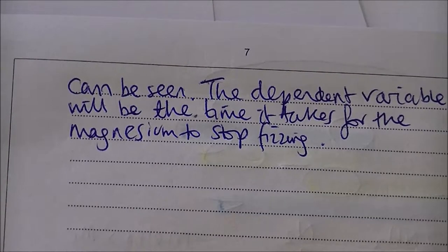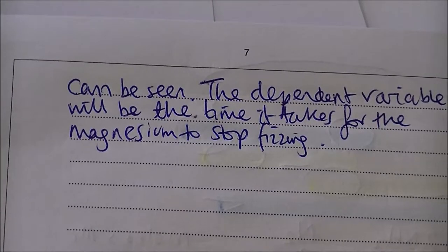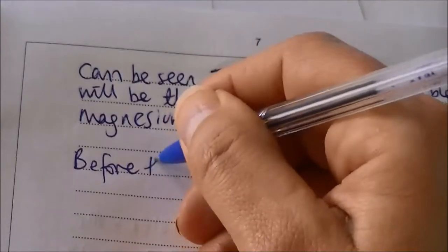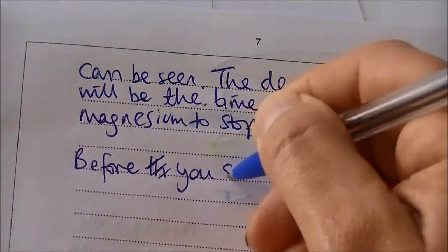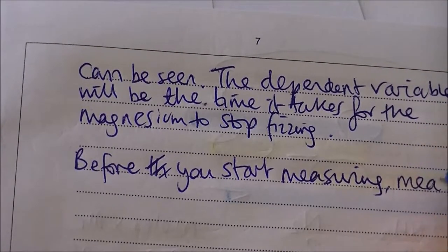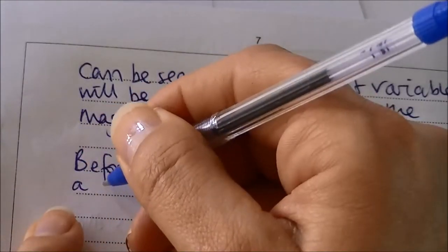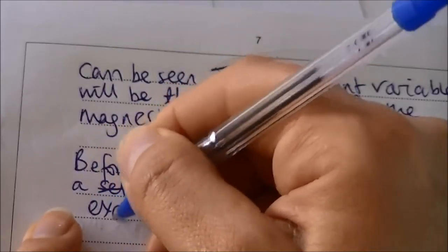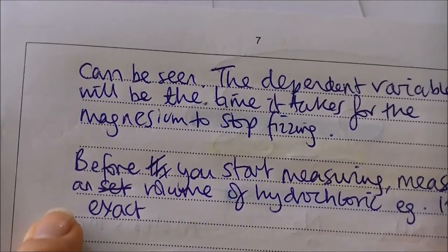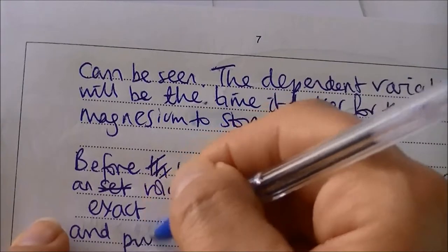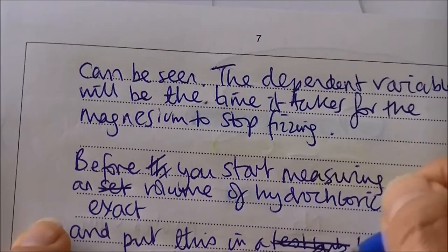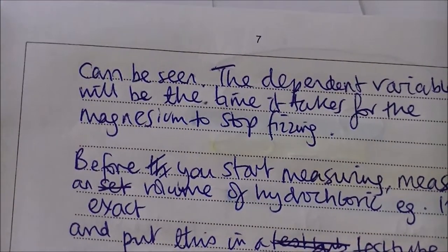The fourth bullet point was about naming apparatus. Going back to the diagram, it had a test tube. So, before you start measuring, measure an exact volume of hydrochloric acid — e.g., 10 centimetres cubed — and put this in a test tube. We've named our apparatus. We haven't mentioned our stopwatches yet. Is there a variable we need to change? Going back to the question, we do need to change the concentration of the acid.